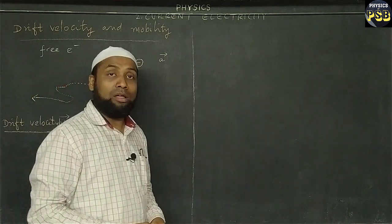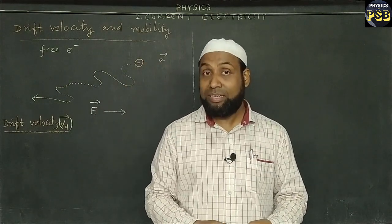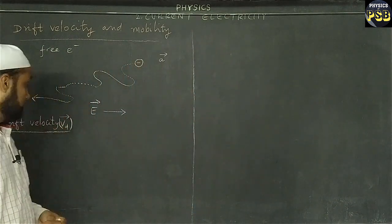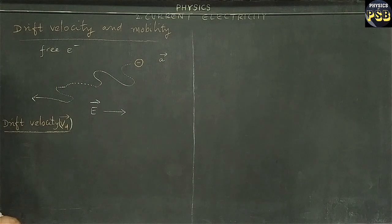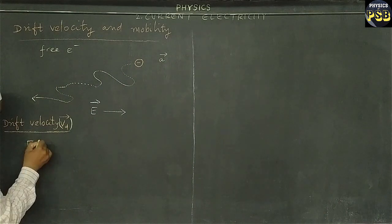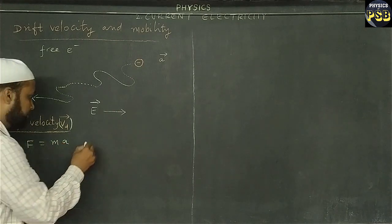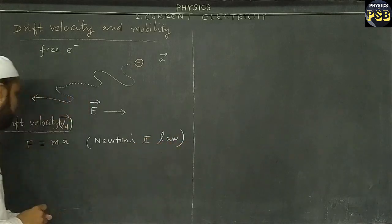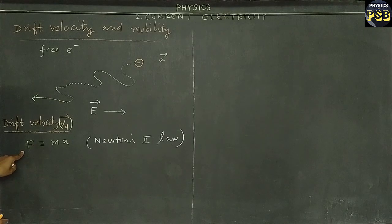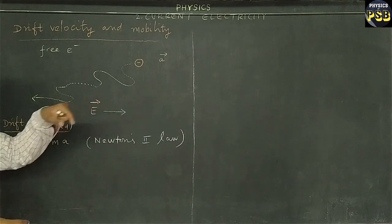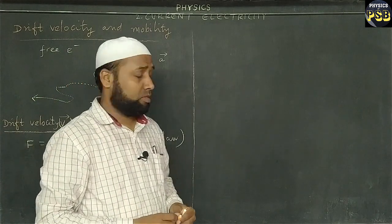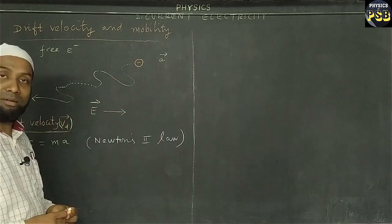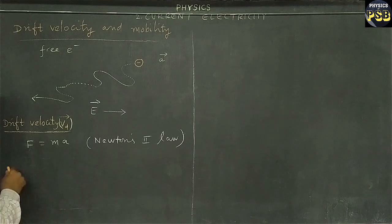denoted by letter Vd. It is a vector quantity, so we use an arrow on top. This is a vector velocity. In this video we will discuss drift velocity in detail. Let's go ahead. In eleventh physics we have learned that the motion of any object requires a force. The expression for force is given by Newton's second law that says F equals to MA. This force drives any object, whereas in our case we have electric force